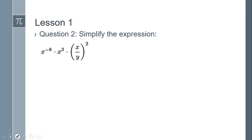Now let's go to question two. Question two has you simplifying an expression still involving exponents, but now we have variables for our base. The rules don't change — they stay exactly the same. I'm going to start from left to right, though you could also distribute the exponent. Notice here we have the same base and we're multiplying with exponents, so according to the product rule we add the exponents and keep the base the same.